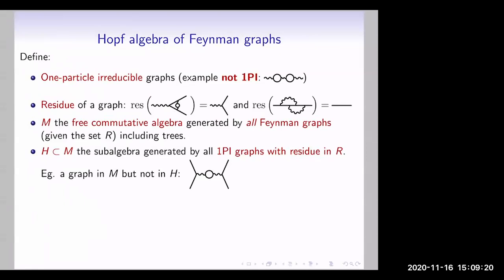The Connes-Kreimer Hopf algebra: we look at one-particle-irreducible graphs. The residue of a graph is the remainder when you shrink all the interior to a point — it tells you the type of graph, whether it's a vertex or edge graph. We look at the free commutative algebra generated by all Feynman graphs given the set R, where we can restrict to the 1PI graphs with residue in R.